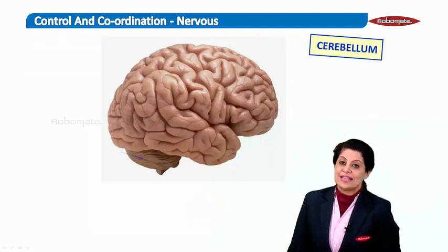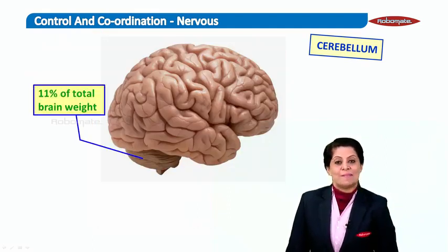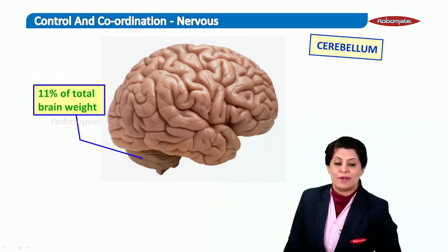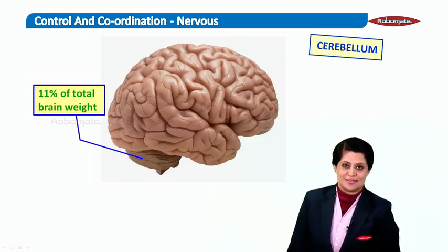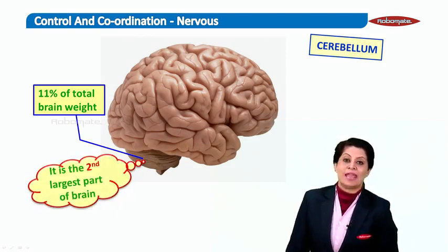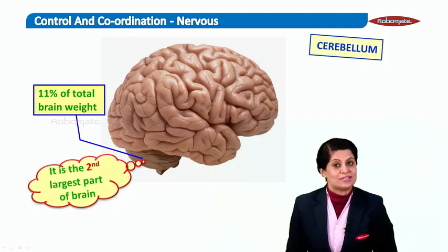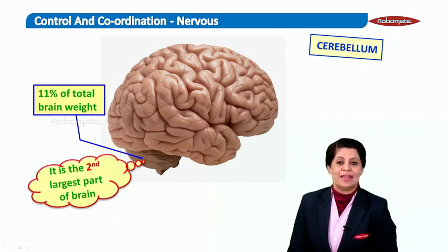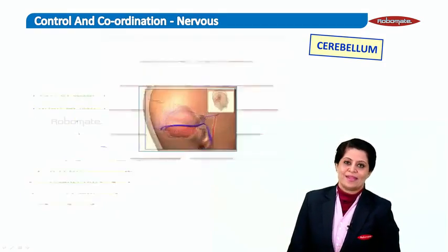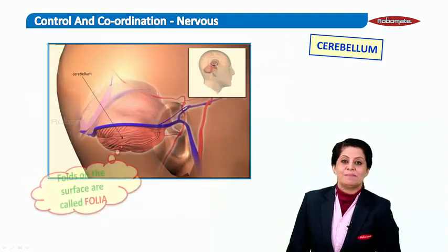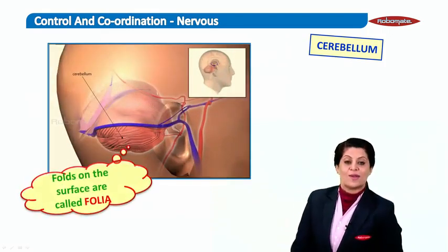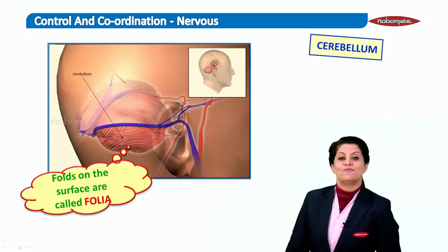The cerebellum comprises 11% of the total brain weight. It is the second largest part of the brain — the largest part being the cerebrum. Outside, the cerebellum has folds which are known as folia.